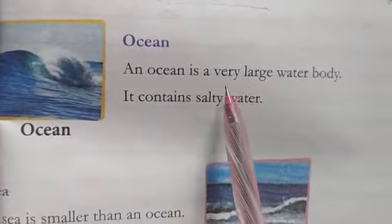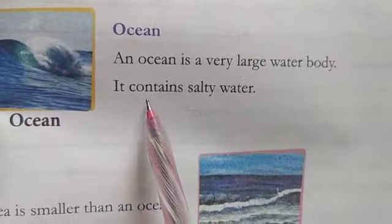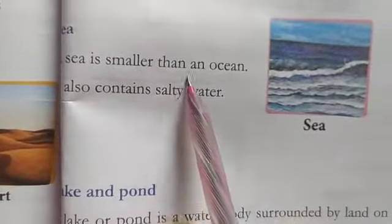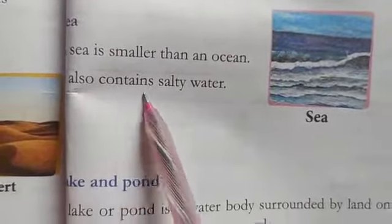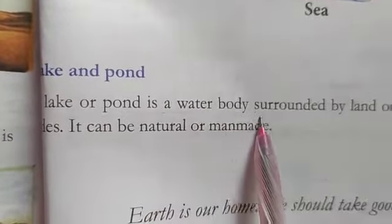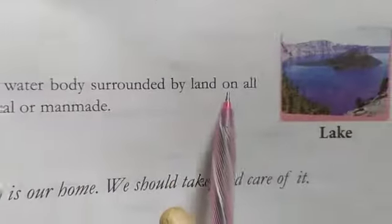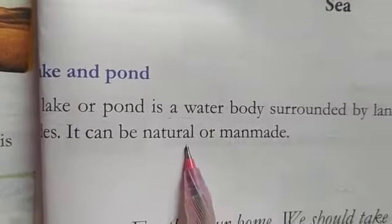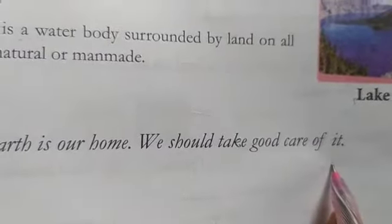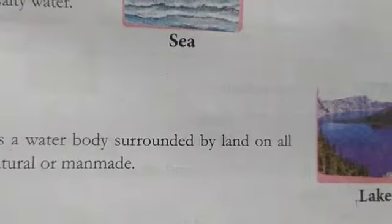An ocean is a very large water body — it contains salty water. The sea is smaller than an ocean and it also contains salty water. A lake or pond is a water body surrounded by land on all sides. It can be natural and man-made. This Earth is our home and we should take good care of it.